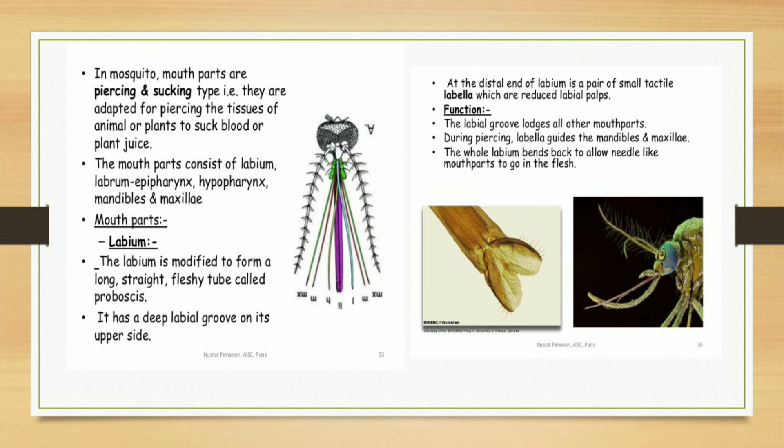First is the labium. The labium is modified to form a long, straight, fleshy tube called proboscis. It has a deep labial groove on its upper side. At the distal end of labium is a pair of small tactile labella, which are reduced labial palps. The function is that the labial groove lodges all other mouthparts. During piercing, labella guide the mandibles and maxillae. The whole labium bends back to allow needle-like mouthparts to go in the flesh.